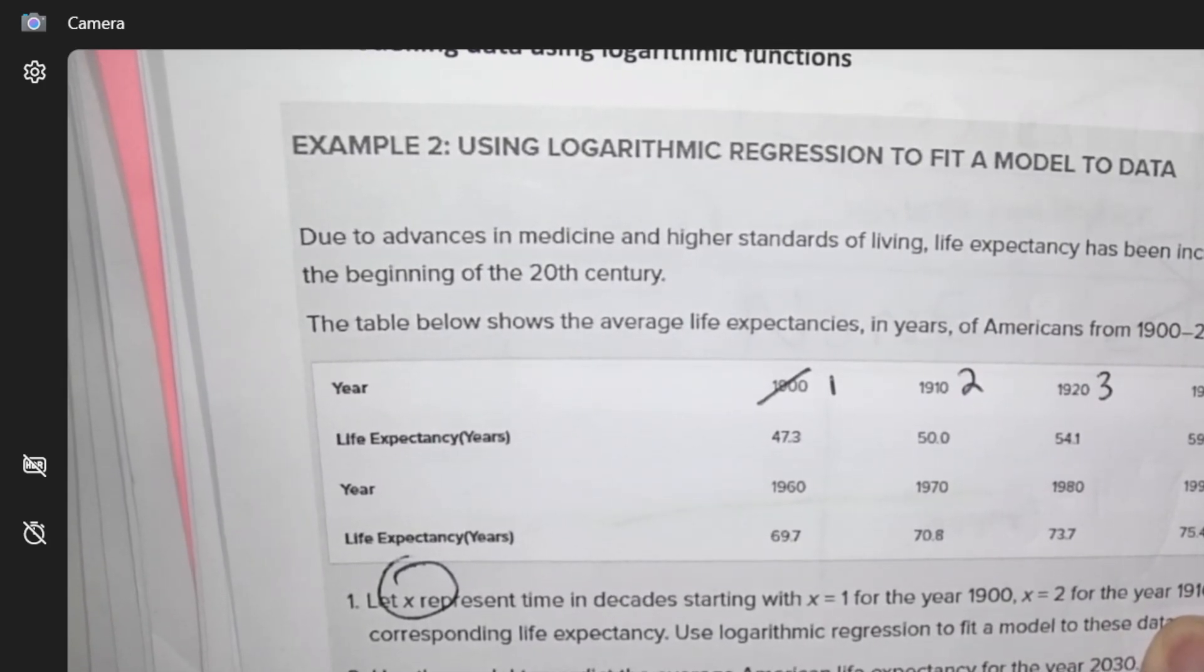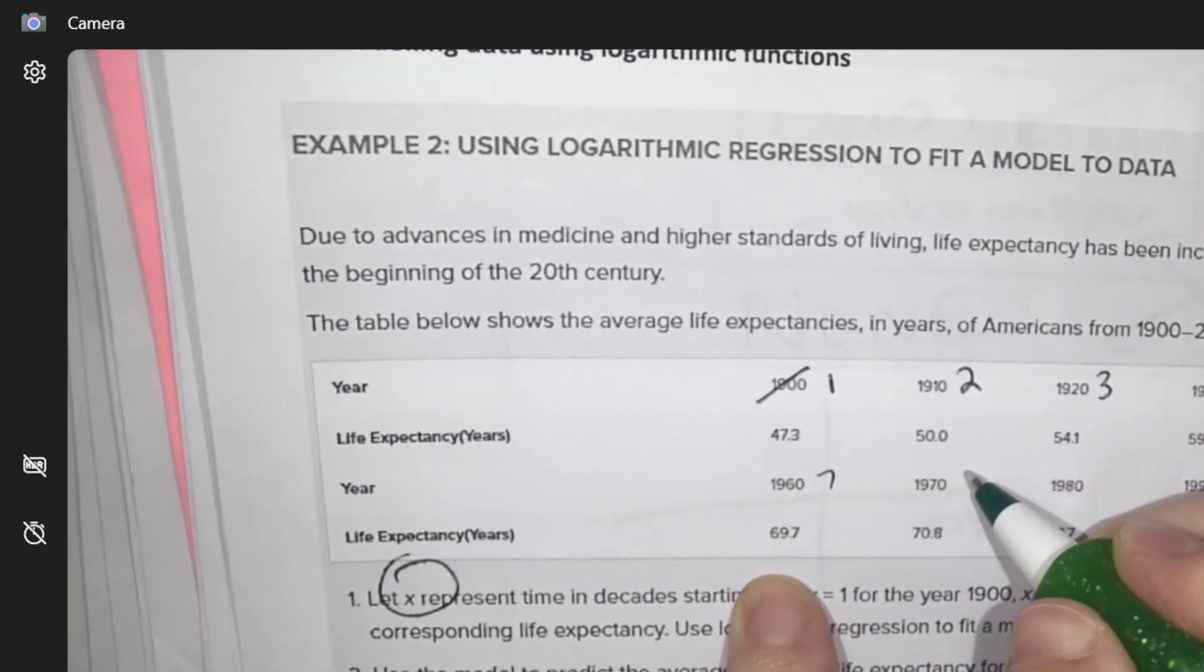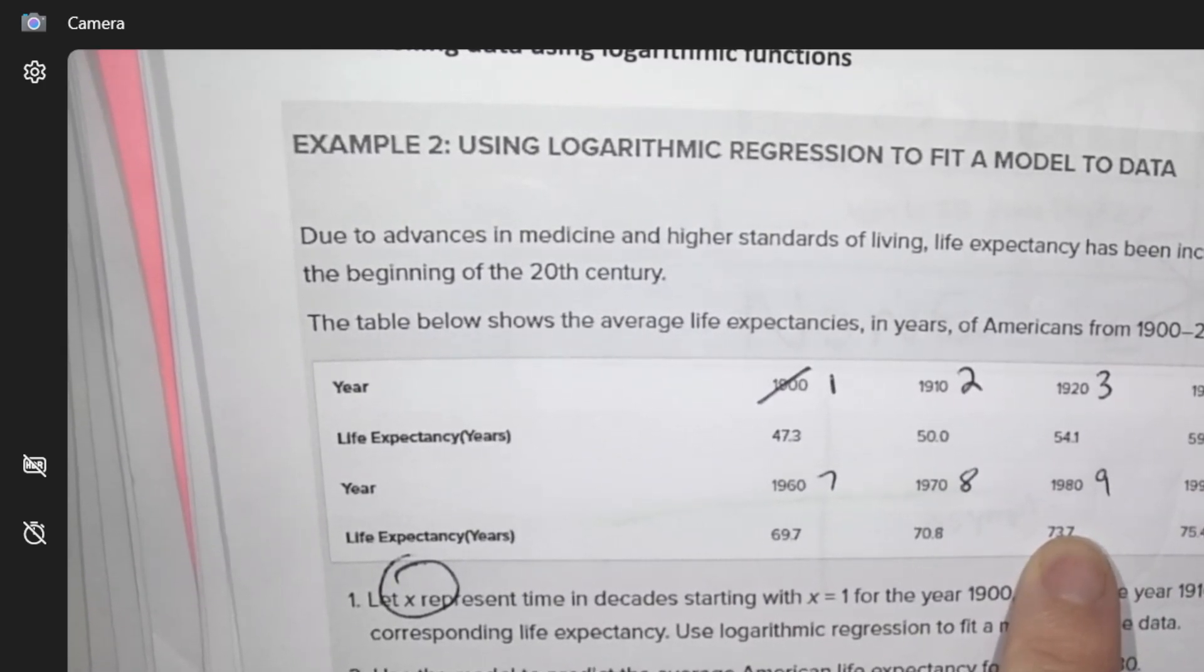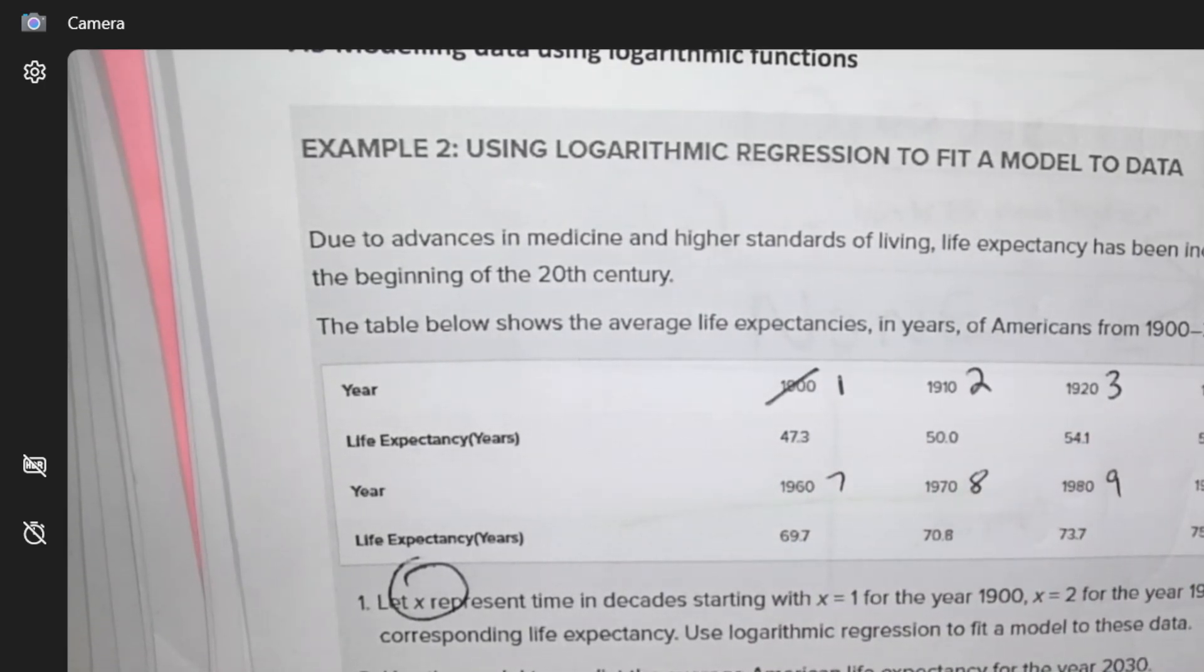3, 4, do we have any gaps? 5, no, 6, 7, 8, 9, 10, 11, and 12. Sometimes you have to be careful because, like I might skip a year, so then you don't always assume it goes in order.